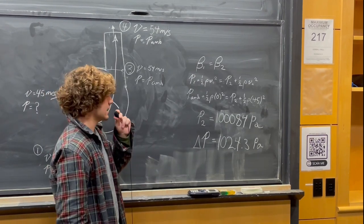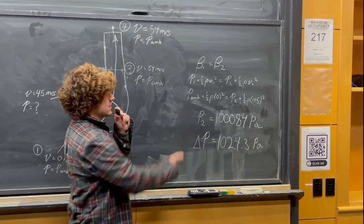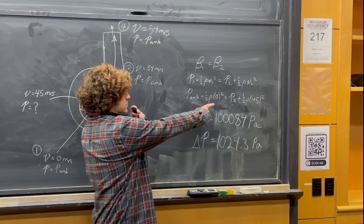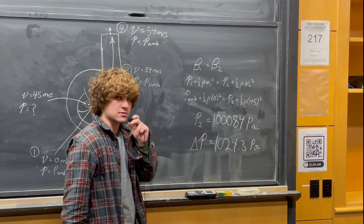At one, P1 is ambient and velocity is zero. At two, we have P2, which is our unknown, and 45 meters per second.